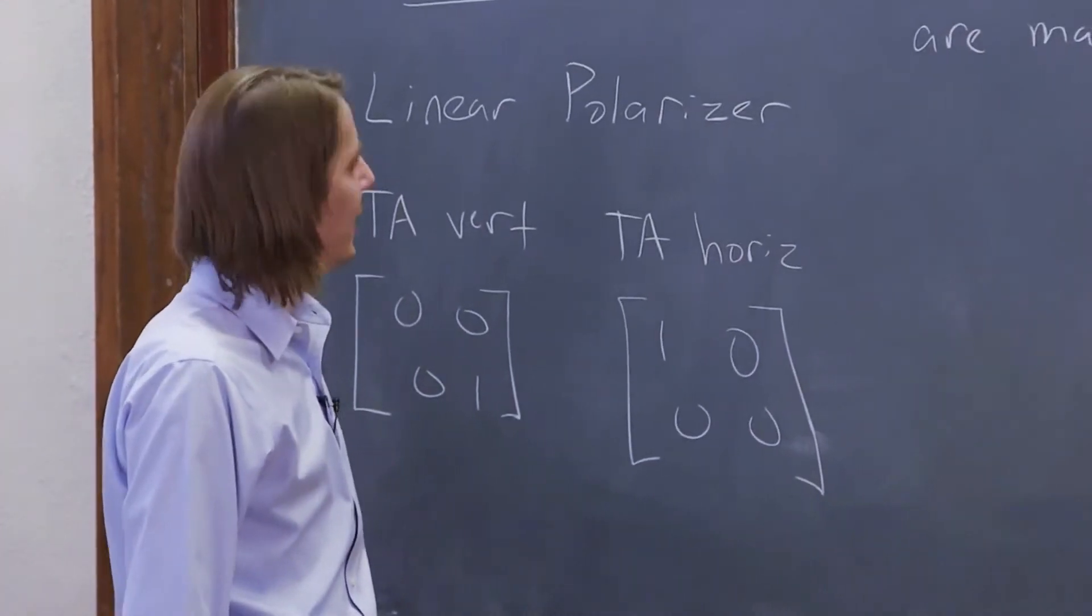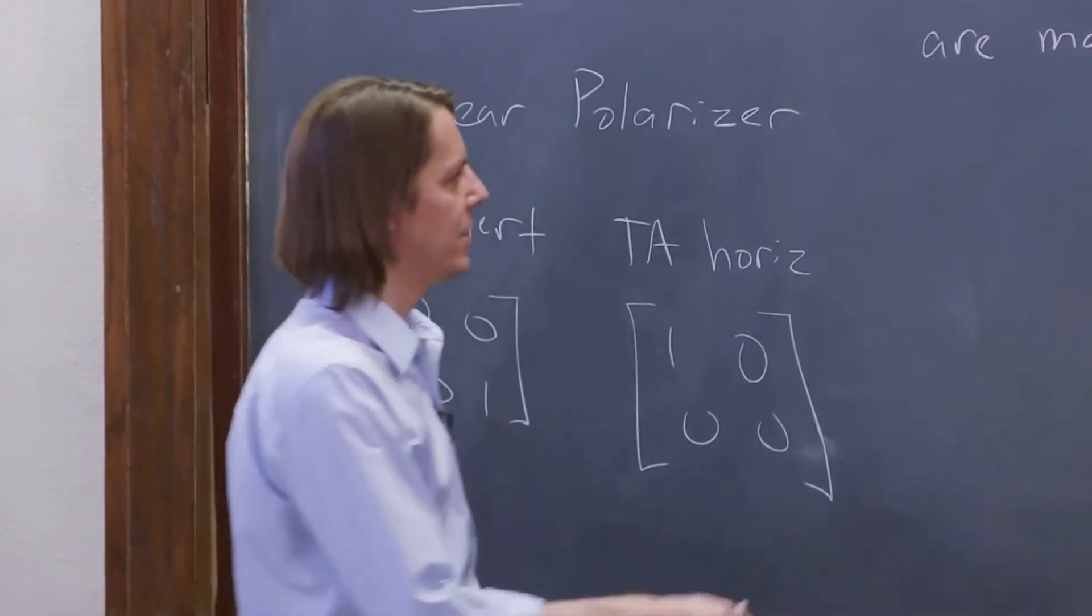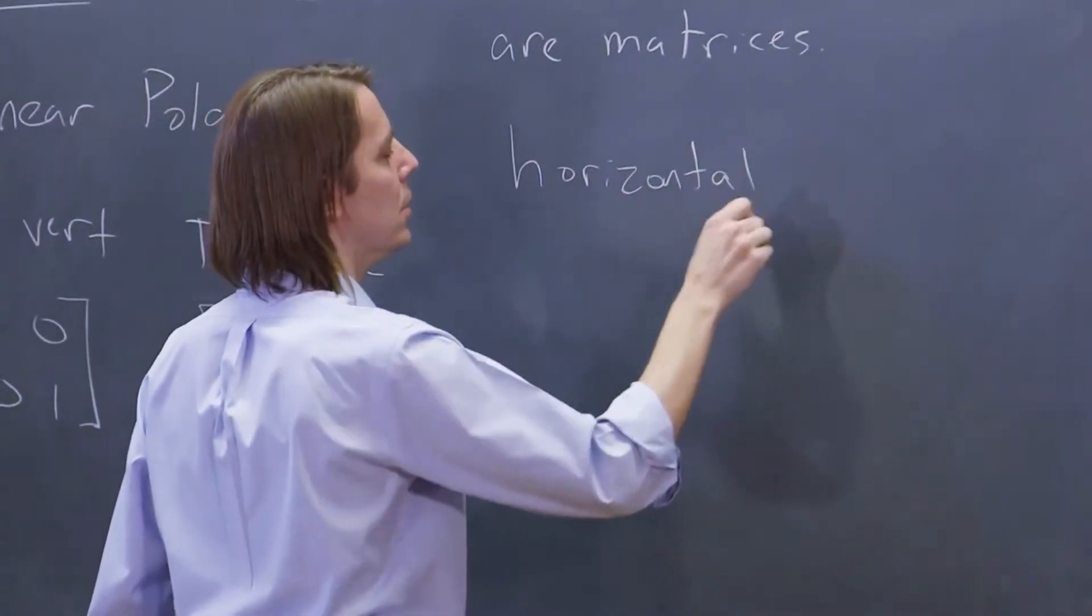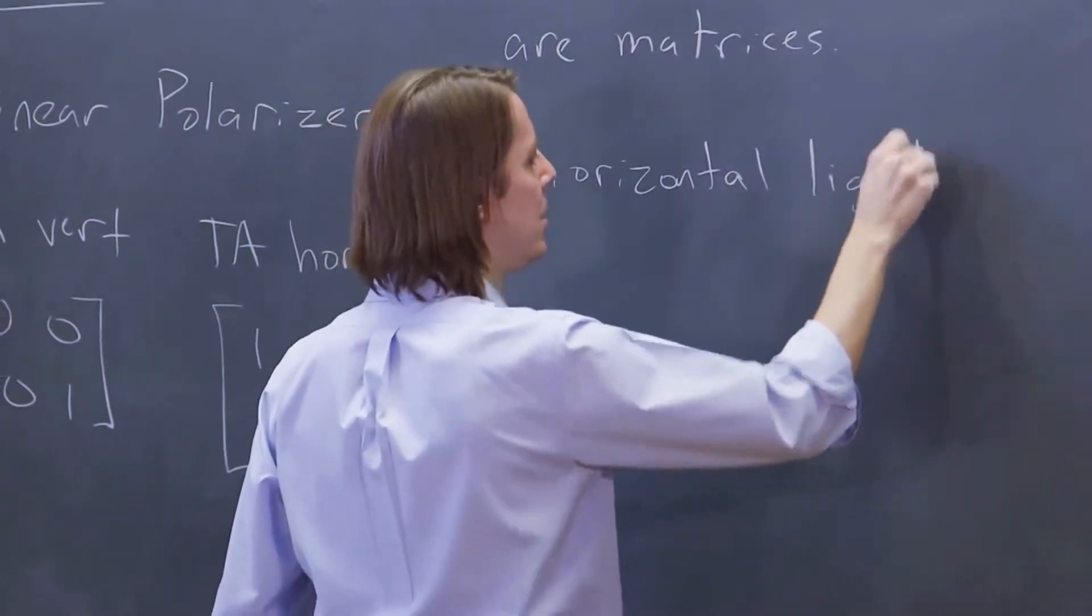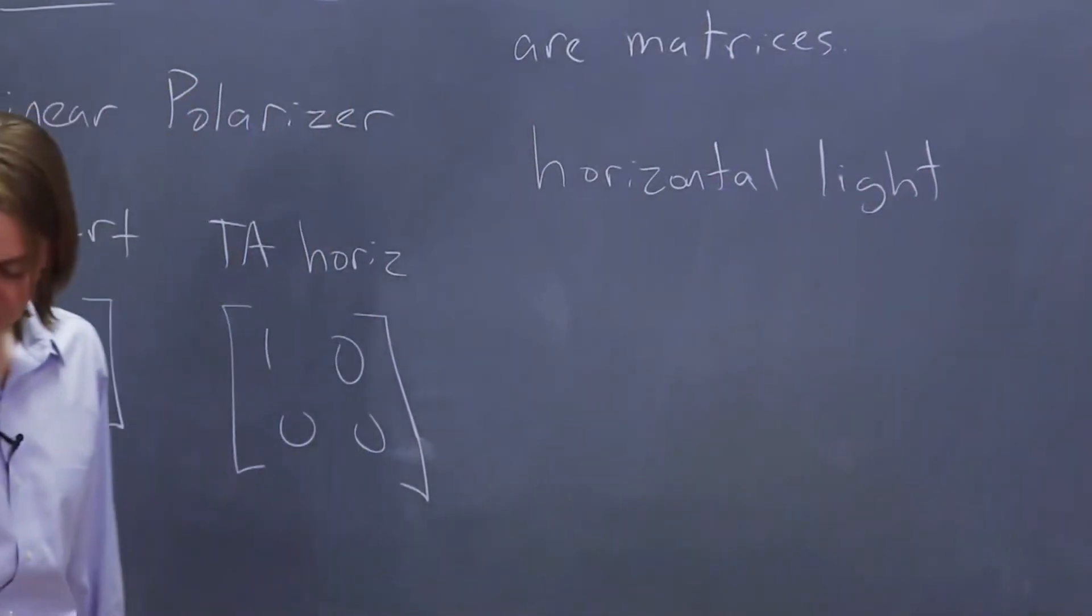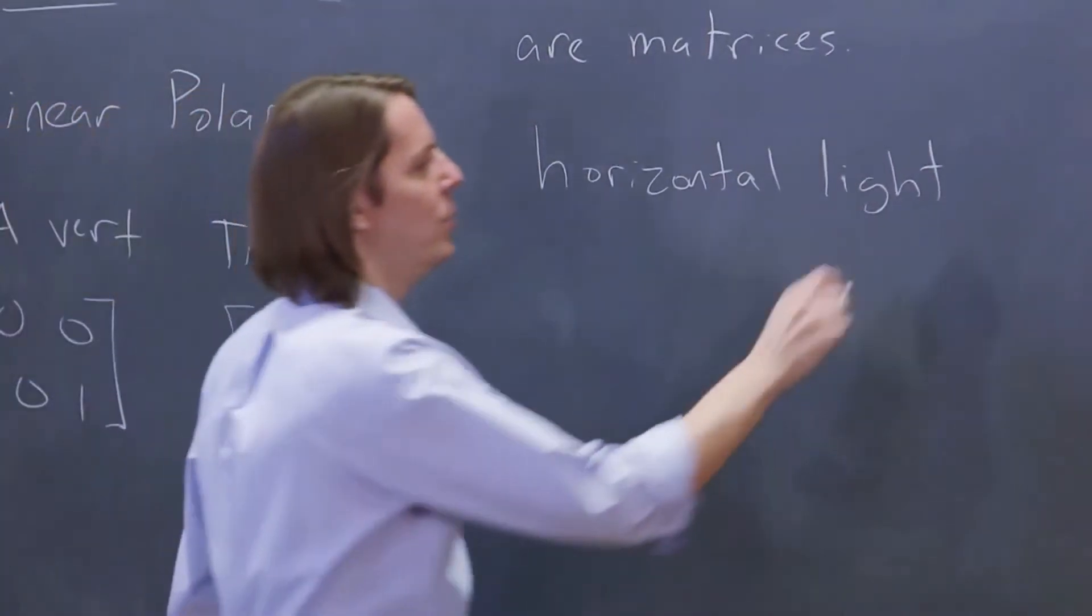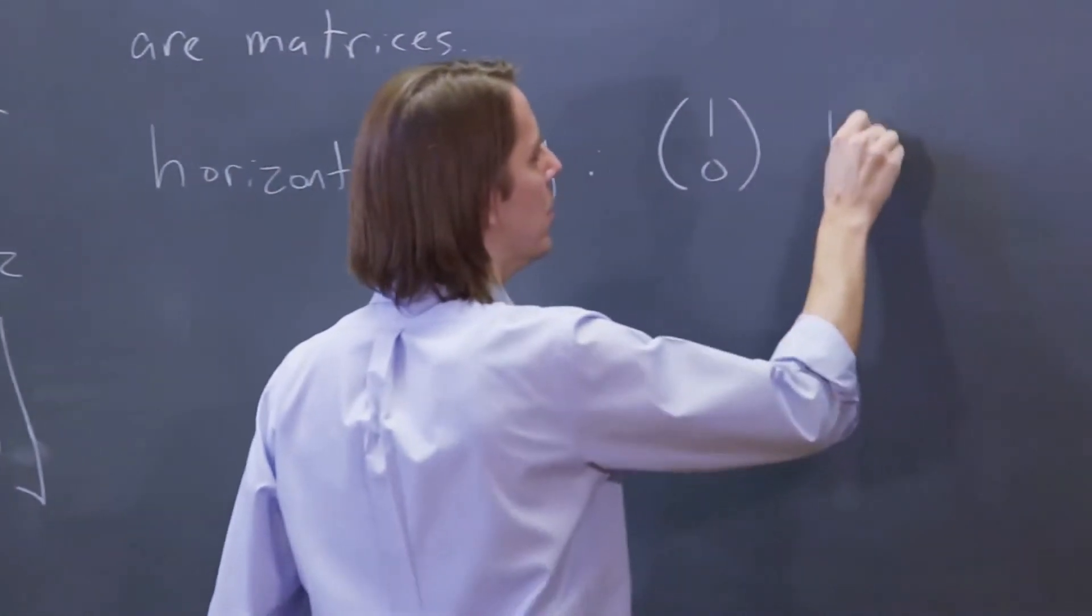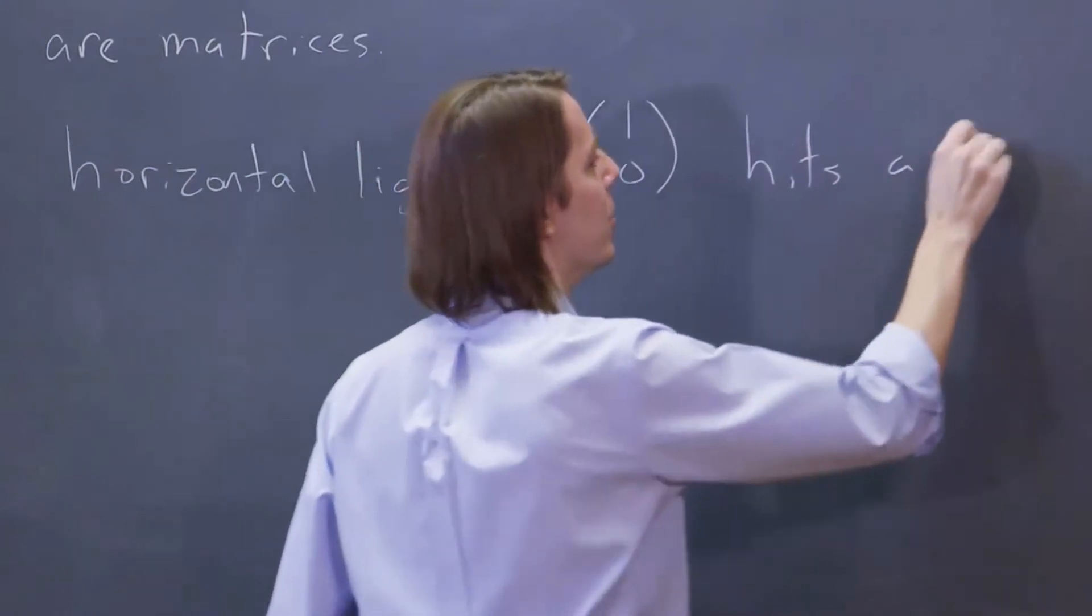Let's look at Jones Calculus in action. Horizontal light, by that I mean linearly polarized, horizontally polarized light, which is described as 1, 0, hits a polarizer.